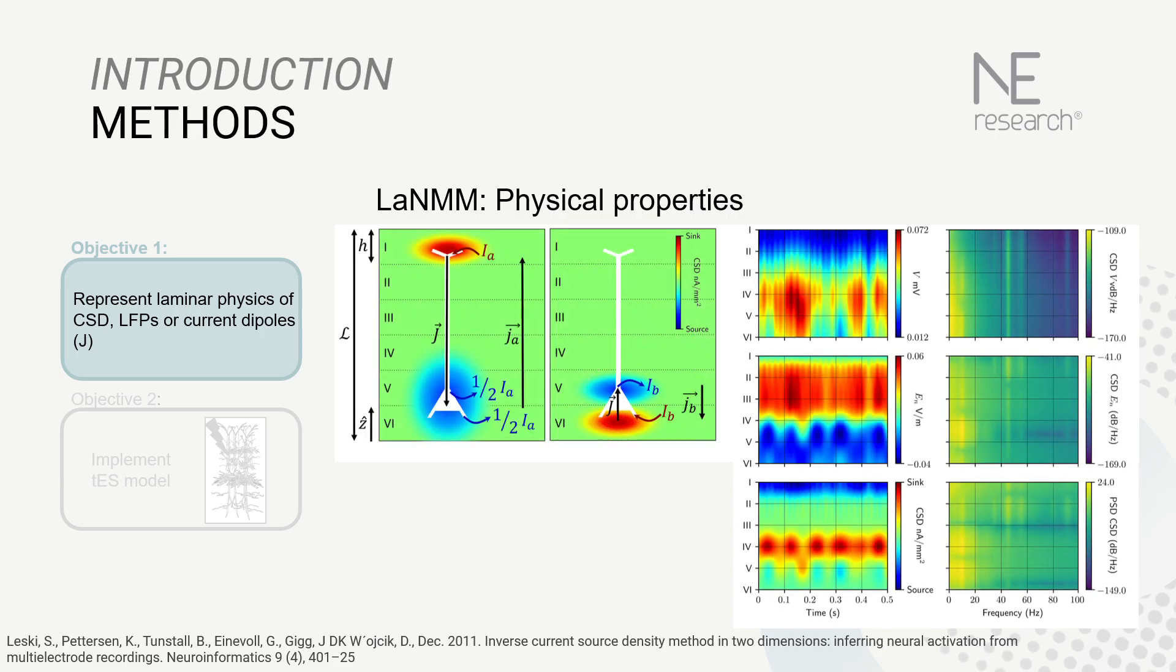Then a planar interface model is used to calculate the electrostatic potential contribution from each current monopole and sum them using the superposition principle. The electric field, current source density, and dipoles are derived from this measurement.